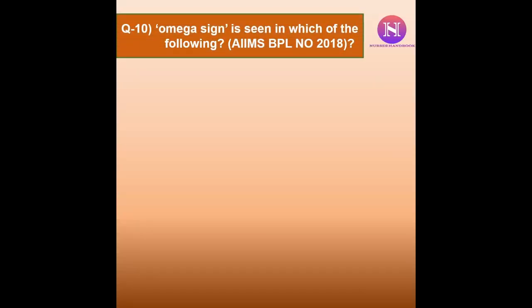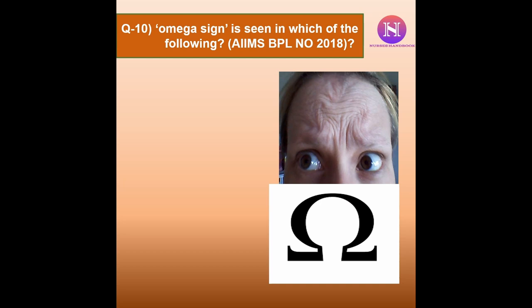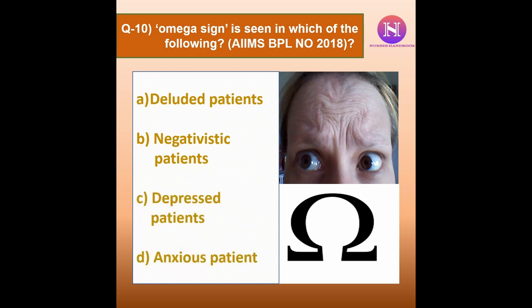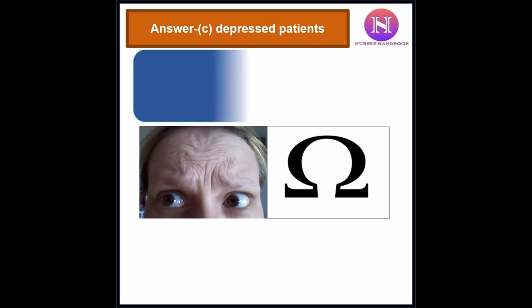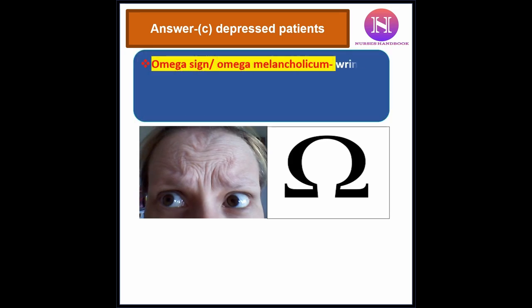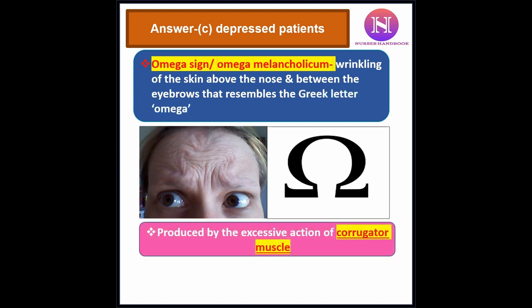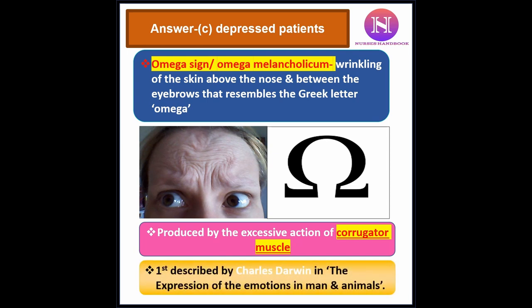Question 10: Omega sign is seen in which of the following? a. Deluded patients. b. Negativistic patients. c. Depressed patients. d. Anxious patients. The correct answer is c — depressed patients. The omega sign, also known as Omega Melancholicum, is the wrinkling of the forehead skin which resembles the Greek letter omega. It is produced by the excessive action of the corrugator muscle and was first described by Charles Darwin.